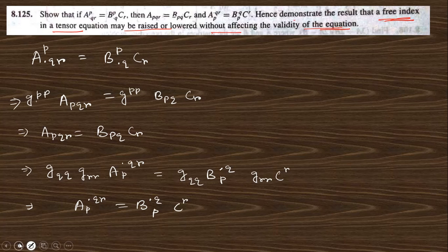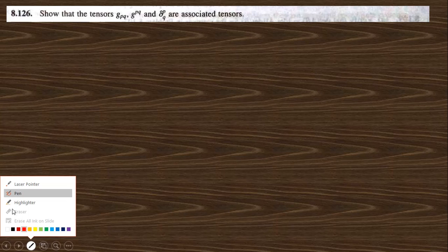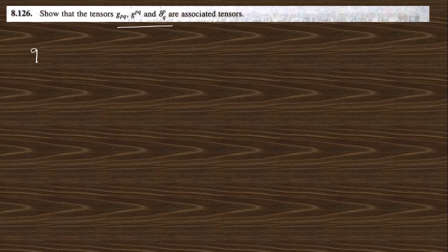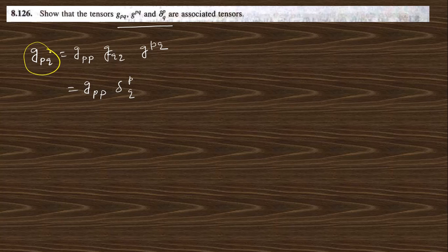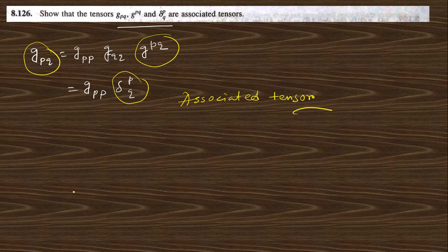Go to the next question: show that the tensor g^pq equals g^pp times g^qq times g_pq. We can write this as g^pp, and these two g's combine into a delta function delta^p_q. So g_pq, g^pp, and g^qq are the associated tensors — these three are the associated tensors.